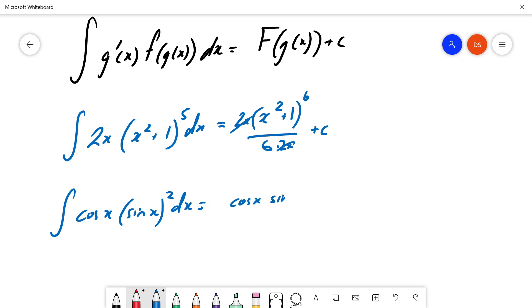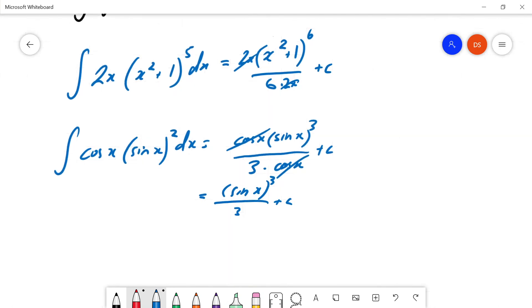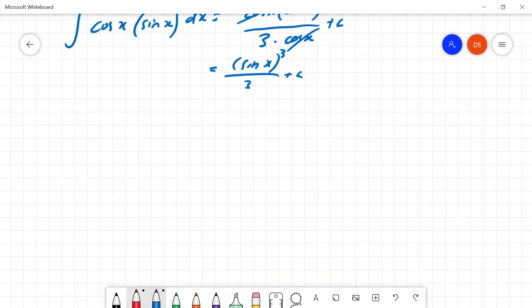cosine x times sine x to the power of 3 divided by the new power and the derivative of the inside cancel, cancel, plus C. And so, your integral is sine cubed over 3 plus C which is quite nice and now you've got another way of doing funkier functions.